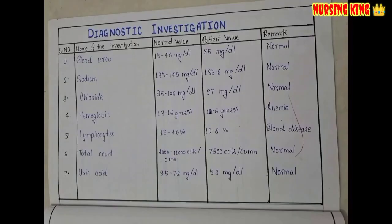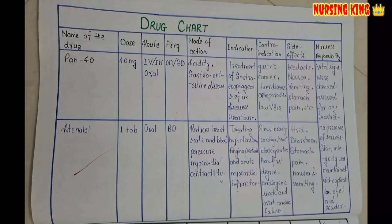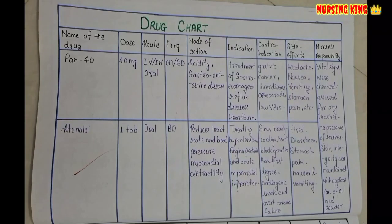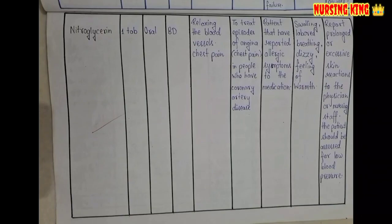After physical examination, you have to write the diagnosis and investigations. Then write the drugs — including the drug name, route, frequency, dose, indication, and nursing responsibility for each medication.